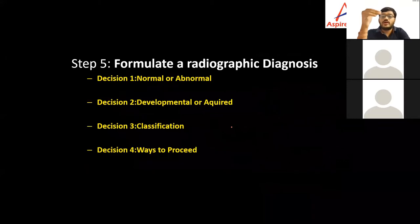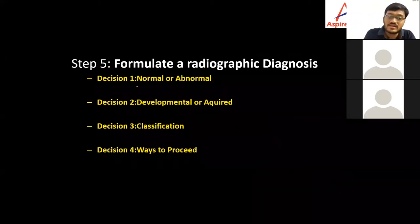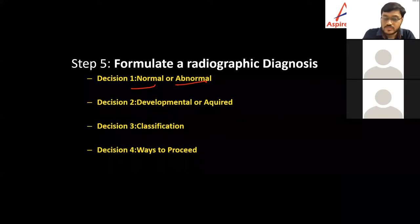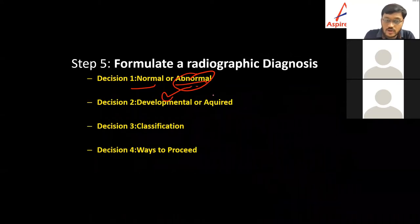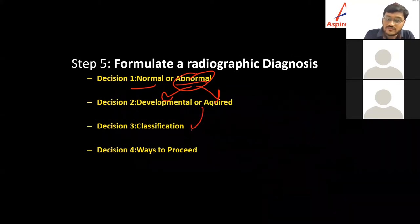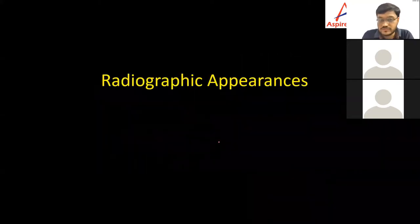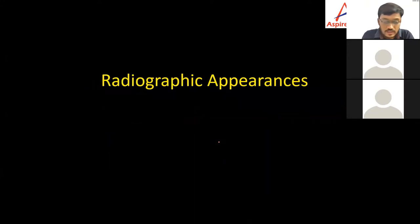The last step is to formulate a radiographic diagnosis. First we need to know whether the condition is developmental or abnormal. If it is normal then we need not go into much detail. If it is abnormal, we need to find out whether it is developmental or acquired, then classify it, and then decide how to proceed further. Now we'll be seeing certain radiographic appearances.